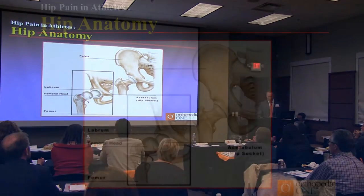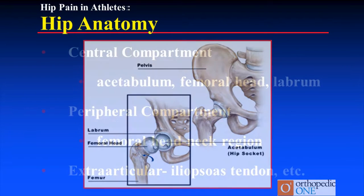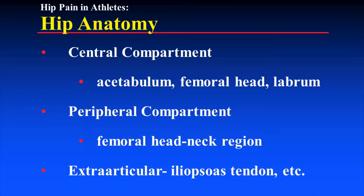Some anatomy you've seen already. The central compartment is the acetabulum — the socket — the femoral head, and the labrum. I tell patients the labrum is like a gasket; it keeps articular fluid in, bathing the articular cartilage, which is where nutrition comes from. Small cartilage pieces can become bigger loose bodies without even being connected. The peripheral compartment is outside the central compartment, the femoral head and neck region. And then extra-articular: the iliopsoas tendon, some of the extra-articular bursa.